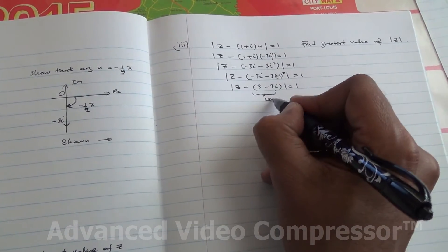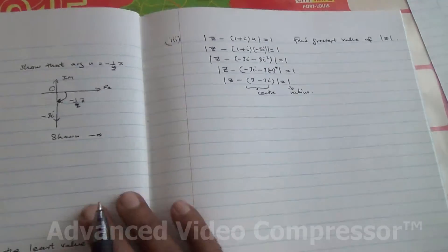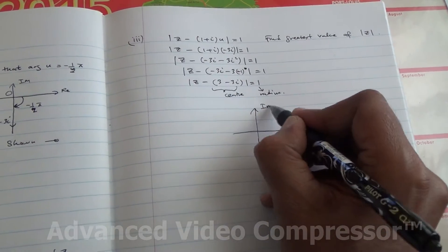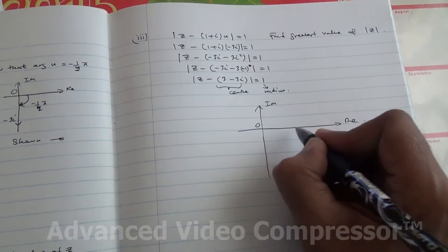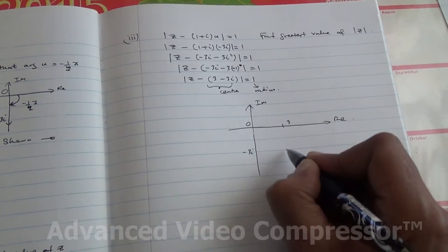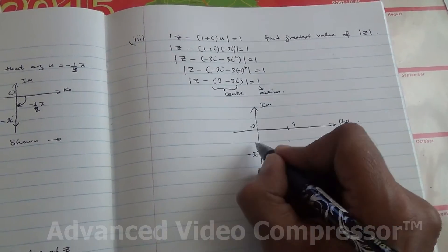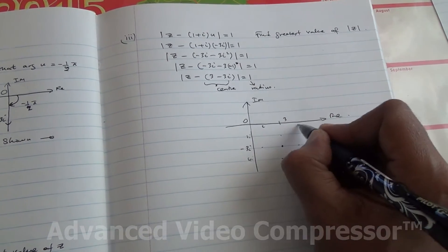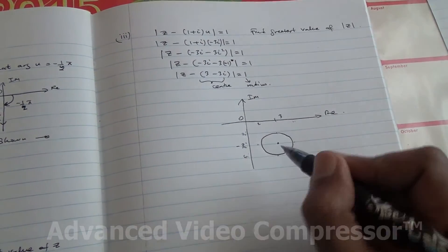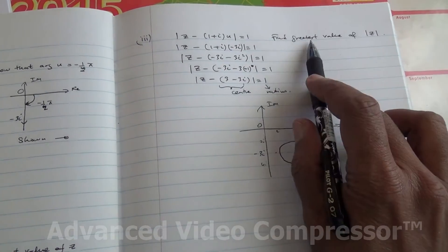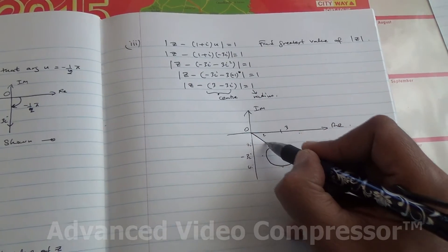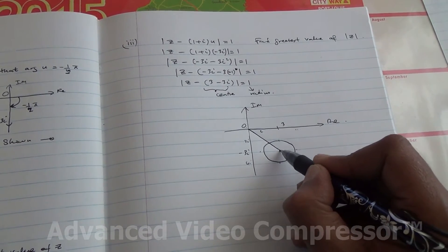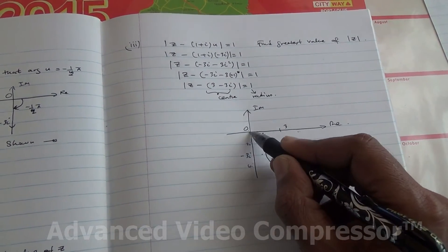This is a circle with centre 3 - 3i and radius 1. Sketching it: the real axis and imaginary axis, the centre is at (3, -3). The greatest possible value of |z| is found by drawing a line from the origin through the centre to the far edge of the circle. We find the distance from the origin to the centre using Pythagoras: √(3² + 3²) = √18 = 3√2.